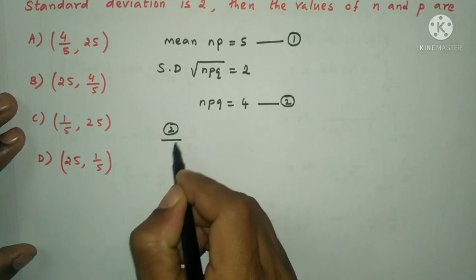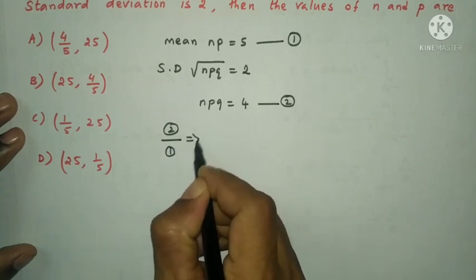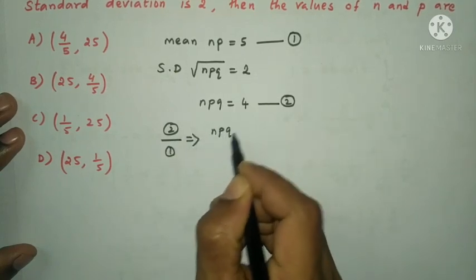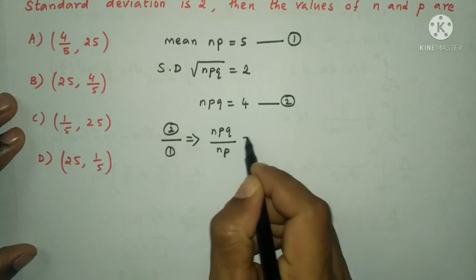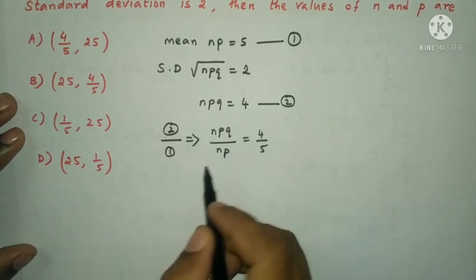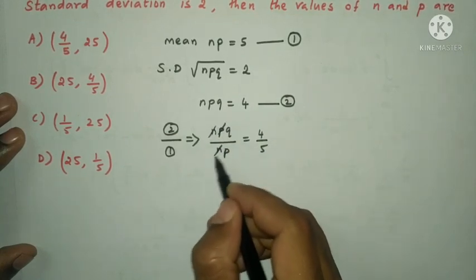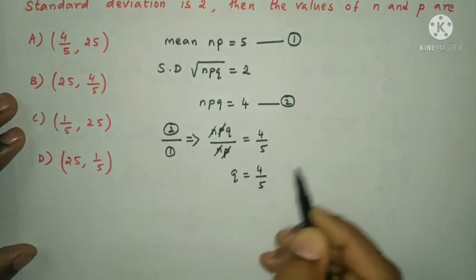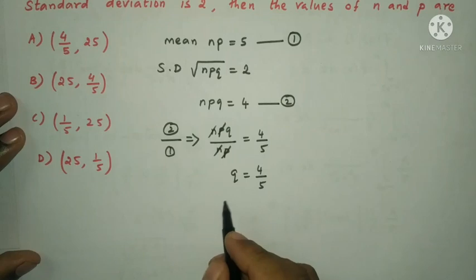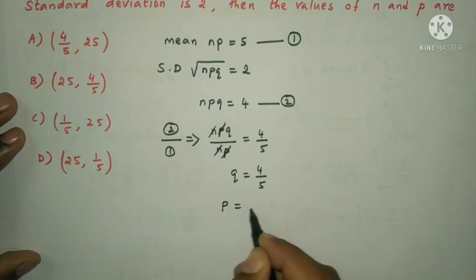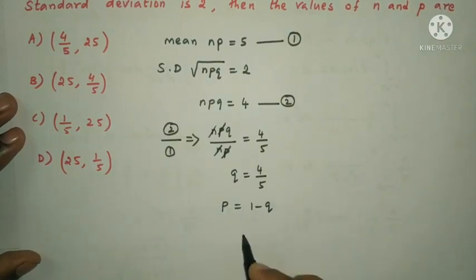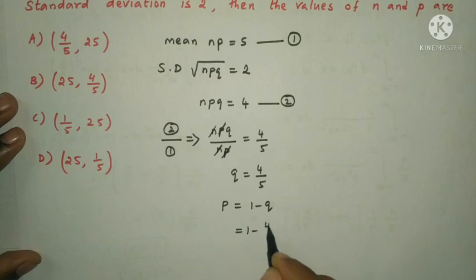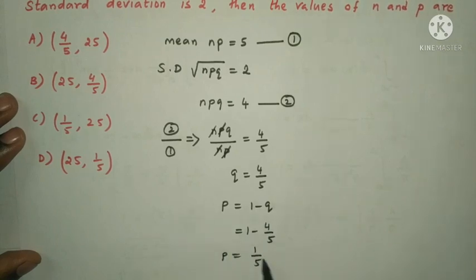Dividing equation 2 by equation 1: NPQ/NP = 4/5, so Q = 4/5. Then P = 1 - Q = 1 - 4/5 = 1/5. Therefore P = 1/5.